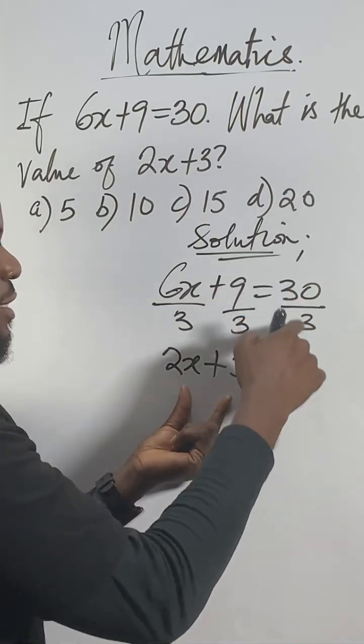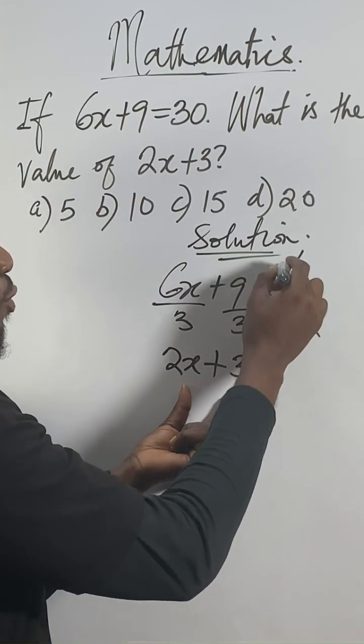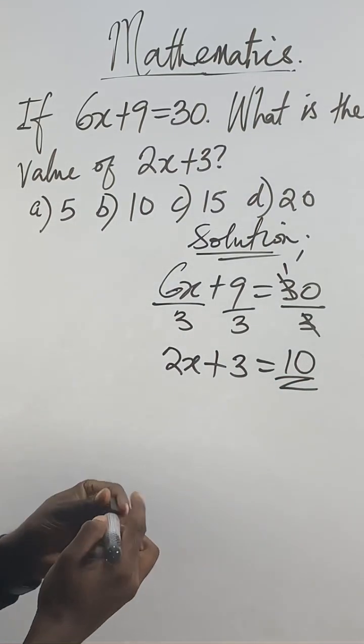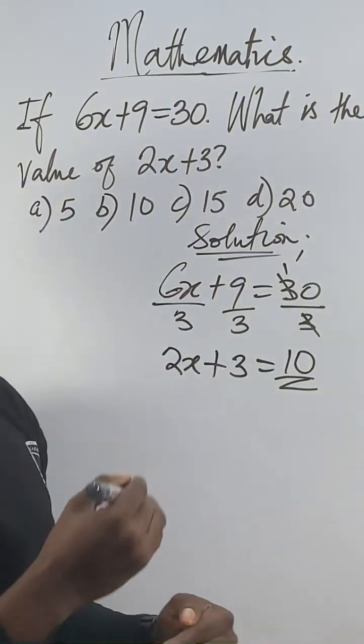So the value now will be 30 divided by 3. 3 into 30 is 10. So the answer is 10. So the option lined up for you: 5, 10, 15, 20. Which one would be the option?